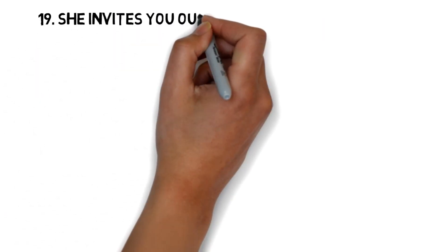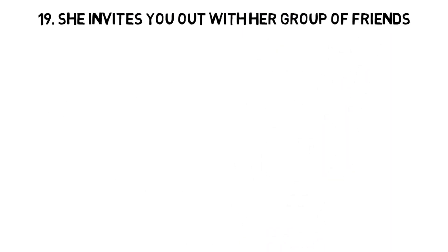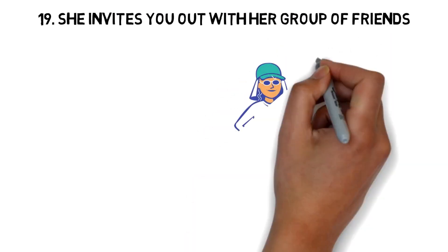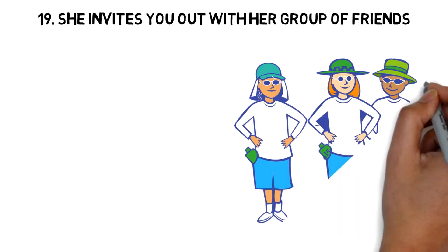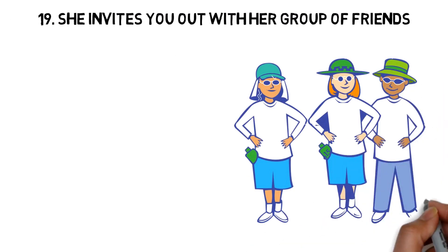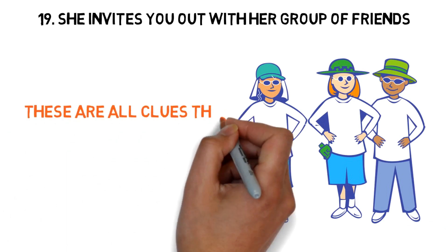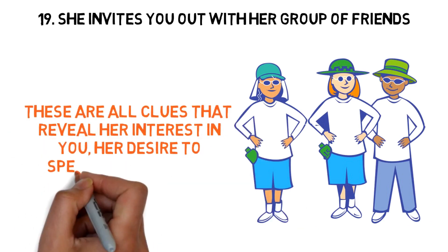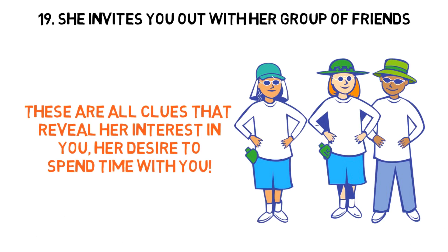19. She invites you out with her group of friends. Since you first met, she has always ensured that you are present when outings are planned. A dinner with friends to which she invites you, a friend's birthday she wants to spend with you, or a housewarming party to which your best friend invites you. These are all clues that reveal her interest in you, her desire to spend time with you.